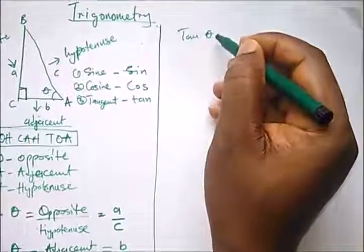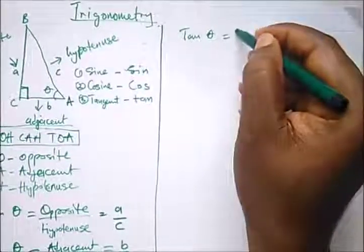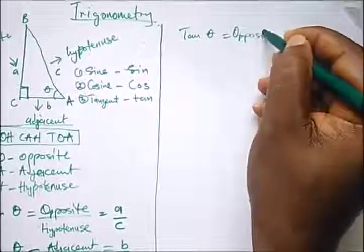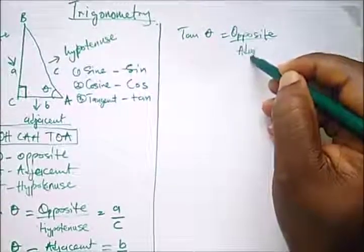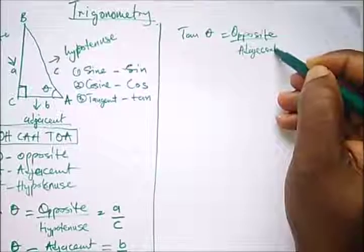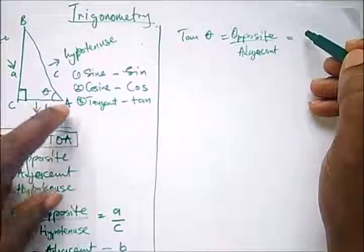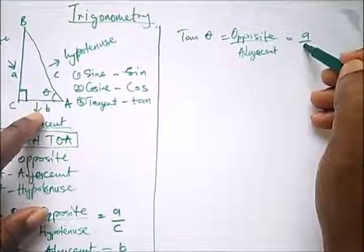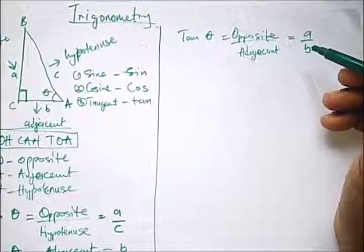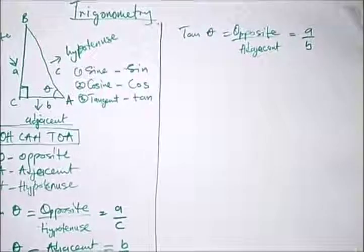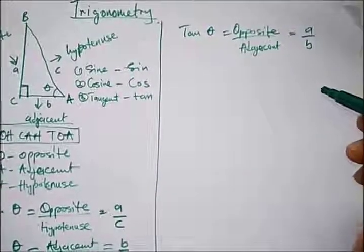To get tan theta, we use TOA: tan theta is opposite over adjacent. Our opposite is A and our adjacent is B, so tan theta equals A over B. This is the formula we apply for our trigonometric ratios.